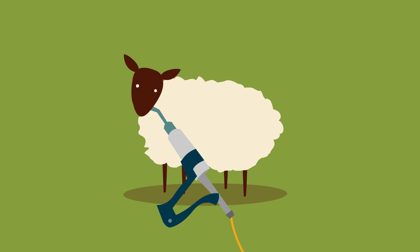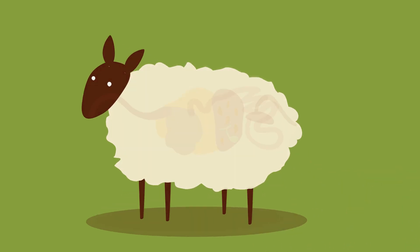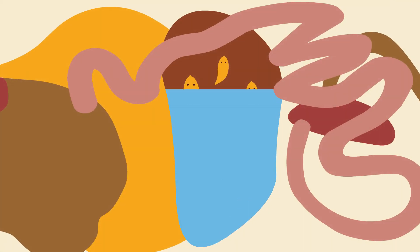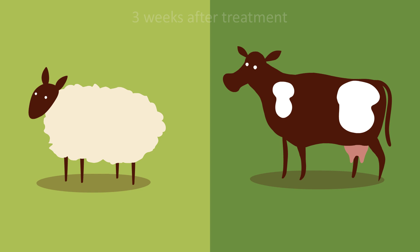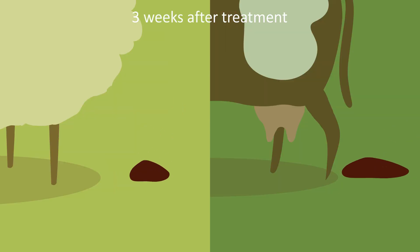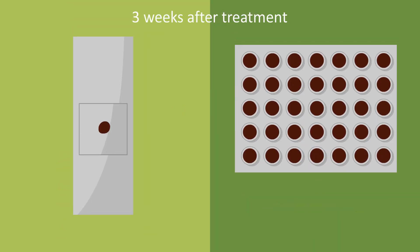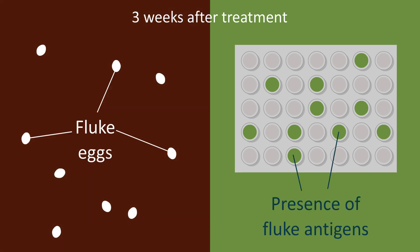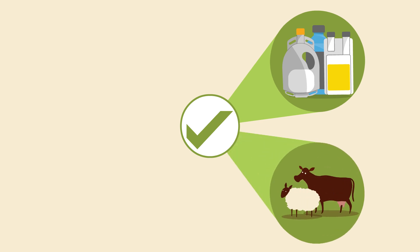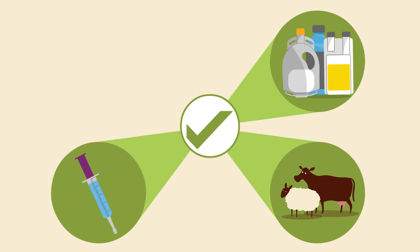Unfortunately, we are hearing increasing reports of triclobendazole resistance, so we must be very careful with this valuable product, and only use it when we need to and when we know it will be effective. To check how well products are working on your farm, testing faecal samples three weeks after treatment would be a good place to start — but discuss this with your vet. It is important to know which active ingredient is in any product being used, and that you use the right product for the right animals, at the right dose, at the right time.